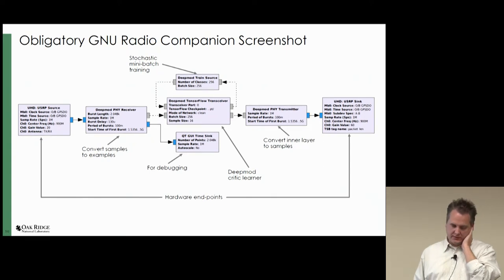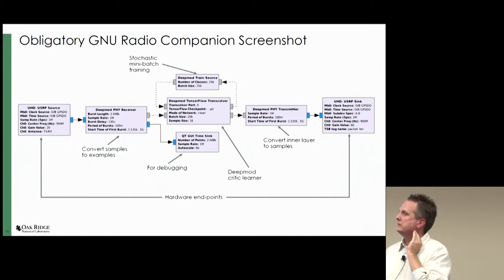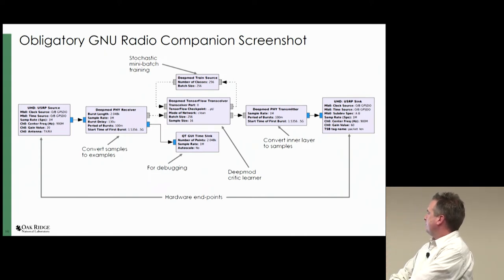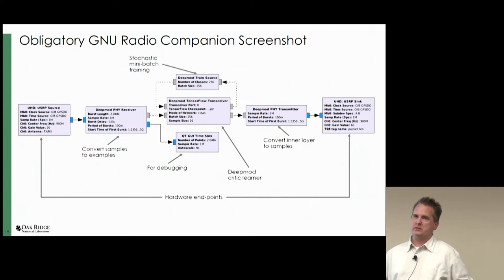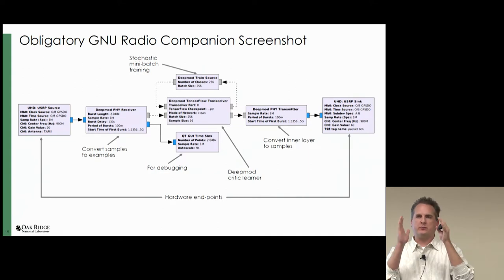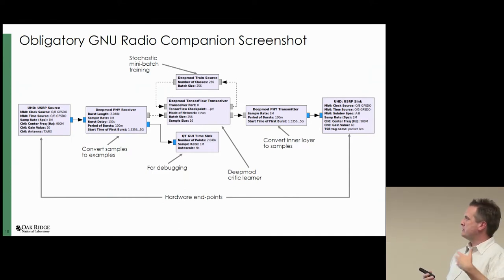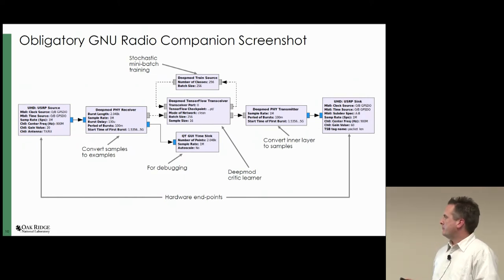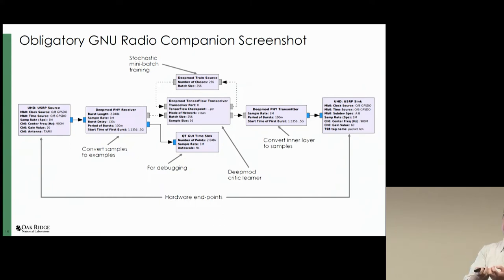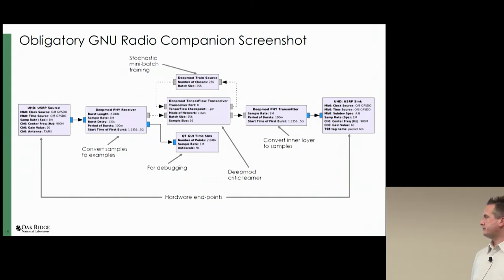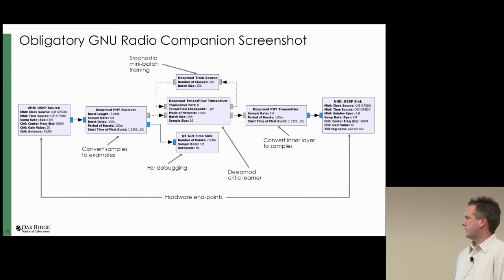Here's the obligatory GRC flow graph — my impression was you have to have one to present at GRCon. What I'm trying to do is get rid of all signal processing and replace it with one machine: that's DeepMod in the middle. I have a training source helper block, and a DeepMod PHY receiver that just takes samples and converts them to examples with no additional processing. Same thing in reverse for transmission, with USRP blocks as hardware endpoints.